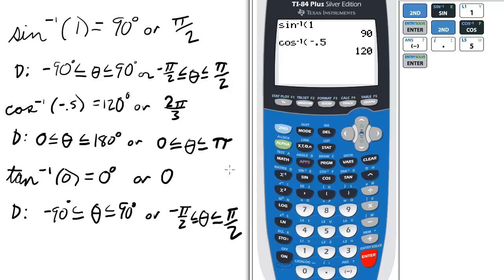Okay, let's for the last one do arc tan of 0. We press 2nd and tan for the inverse tan, then 0.